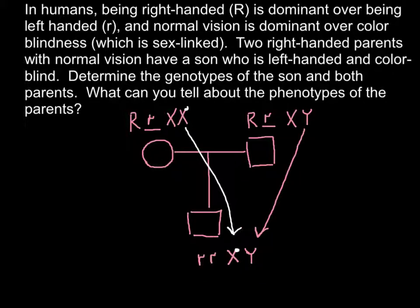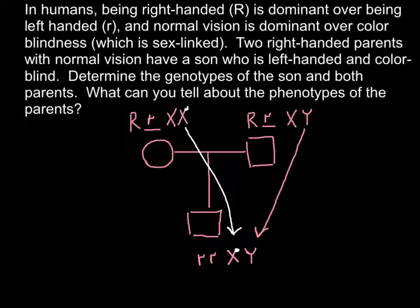If the father had a defective X chromosome, he would also express this disorder and would be colorblind — but his father is not colorblind. So now we have answered all the questions. We know the genotype of the mother, the father, and the child.